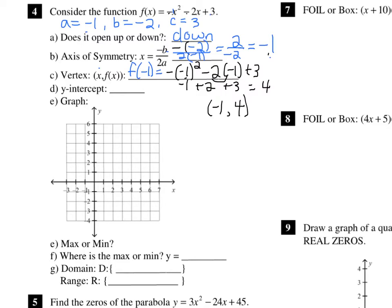Let's draw everything we have so far. The axis of symmetry is negative 1, so that's going to go right there. Our vertex is up 4. Our y-intercept is whatever C equals, and C equals 3. So I'm going to put a dot on 3 on the y-axis, make the point opposite that which is symmetric, and since this thing opens down, connecting those dots means it opens down.